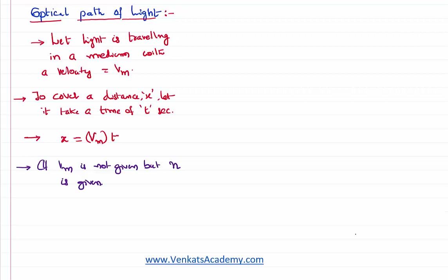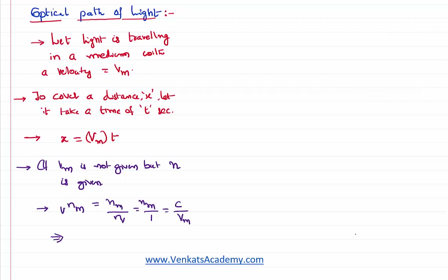But the refractive index of that medium is given to us. We know that the refractive index of the medium with respect to vacuum is the velocity of light in vacuum divided by the velocity of light in the medium. So I can write the velocity of light in the medium as c divided by the refractive index n of that medium.